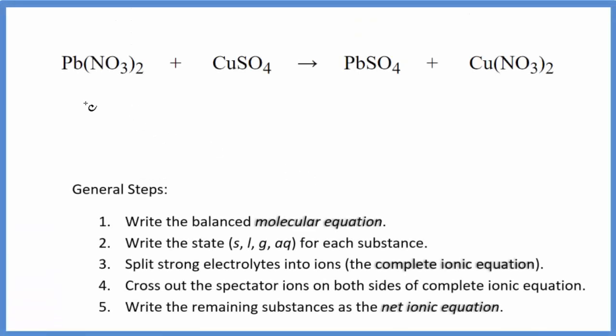In this video, we'll write the balanced net ionic equation for Pb(NO3)2 plus CuSO4. That's lead 2 nitrate plus copper 2 sulfate.